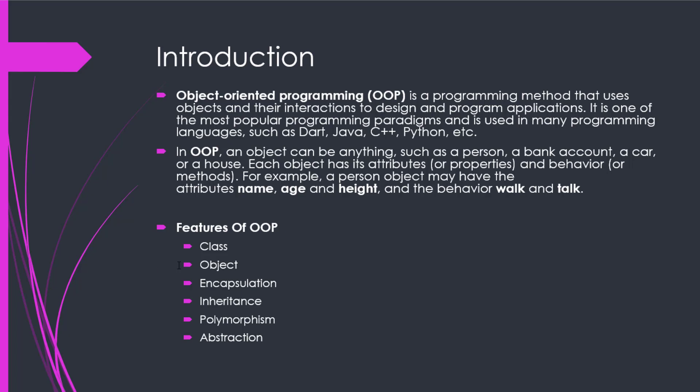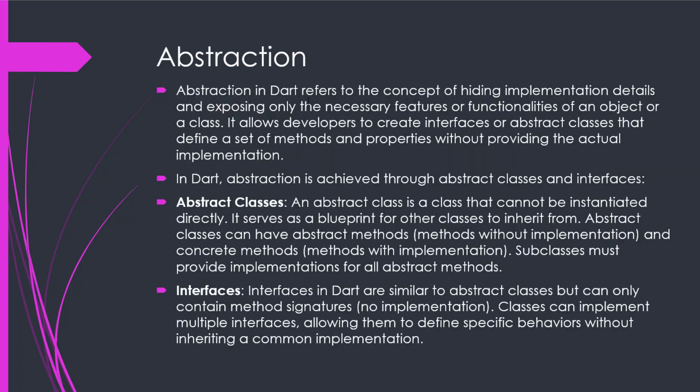Abstraction is a feature of OOP. We already discussed different features of OOP: Class, Object, Encapsulation, Inheritance, Polymorphism — but Abstraction is the last feature, or pillar, of OOP. Abstraction in Dart refers to the concept of hiding implementation details and exposing only the necessary features or functionalities of an object or class. It allows developers to create interfaces or abstract classes that define a set of methods and properties without providing the actual implementation. In Dart, Abstraction is achieved through abstract classes and interfaces.